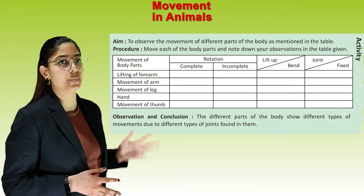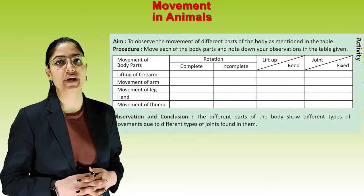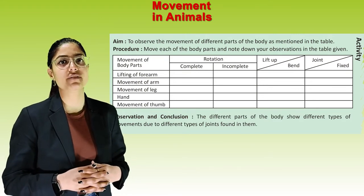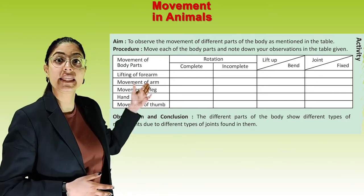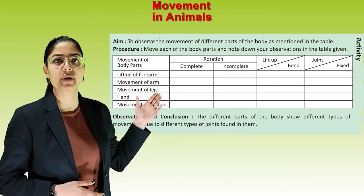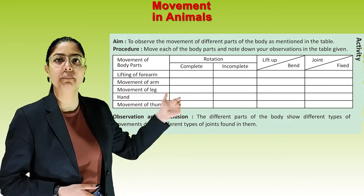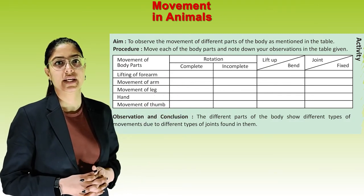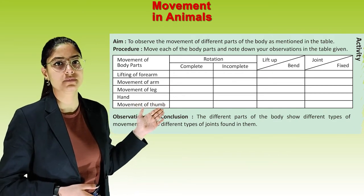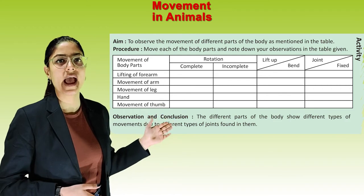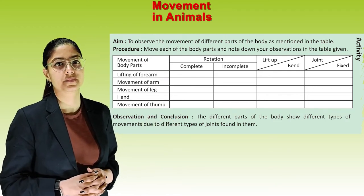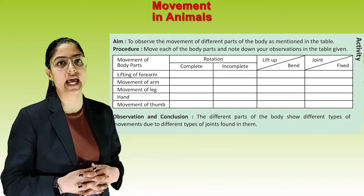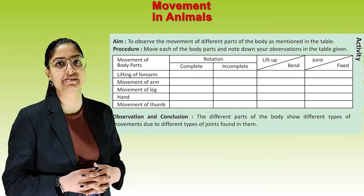Activity: To observe the movement of different parts of the body as mentioned in the table. Procedure: Move each body part and note down your observation in the table — recording rotation (complete or incomplete), lift up or bend, and joint or fixed. Body parts include: lifting of forearm, movement of arm, movement of leg, hand, and movement of thumb. Observation and conclusion: The different parts of the body show different types of movement due to the different types of joints found in them.